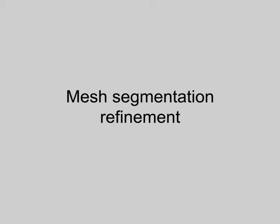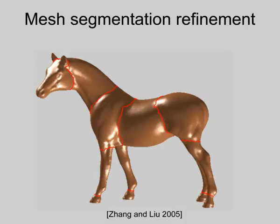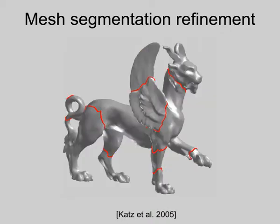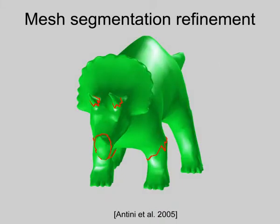Many algorithms have been recently proposed for segmenting meshes. While many existing mesh segmentation methods can find a good initial conceptual part composition of the mesh, the boundaries between these parts often remain subpar. These boundaries might not only pass on undesirable locations, but also are often jagged, being constrained to pass through the vertices.